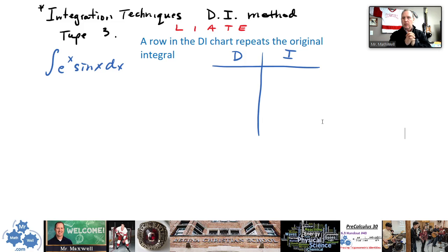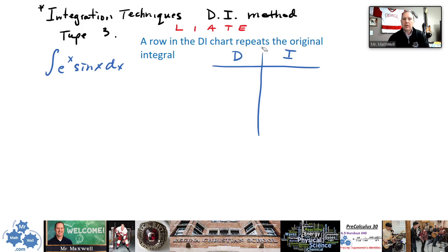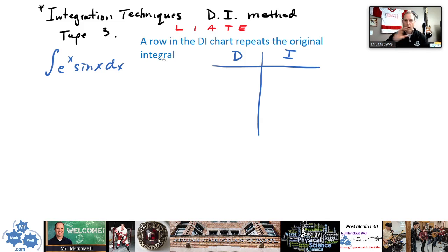This one is type three. So this is DI method still, but what you want to keep an eye on here is this: when a row in the DI chart repeats the original integral, then you stop. That's when you stop. When a row in the DI chart starts to repeat the original, that is type three.